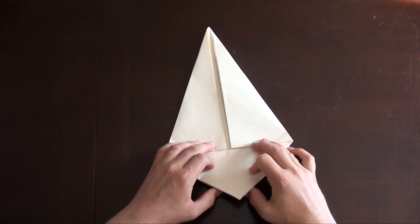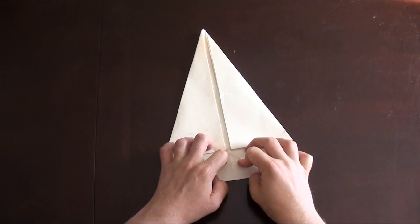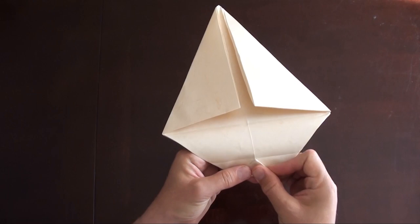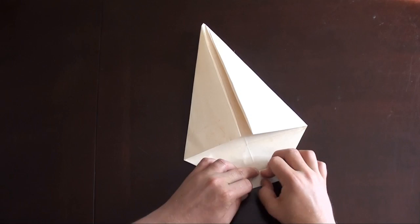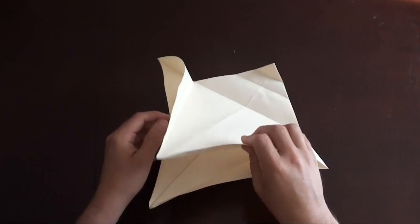And fold this corner to the crease. And one more time right to the crease. Okay, now we have to sink this point. Open sink it. So, open up the whole paper.